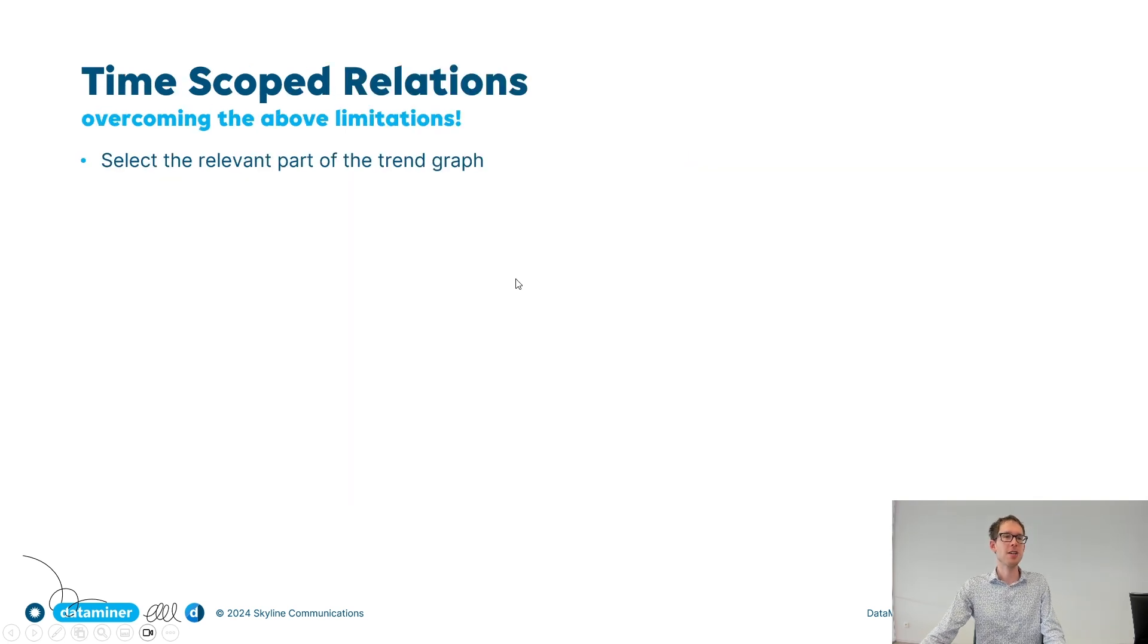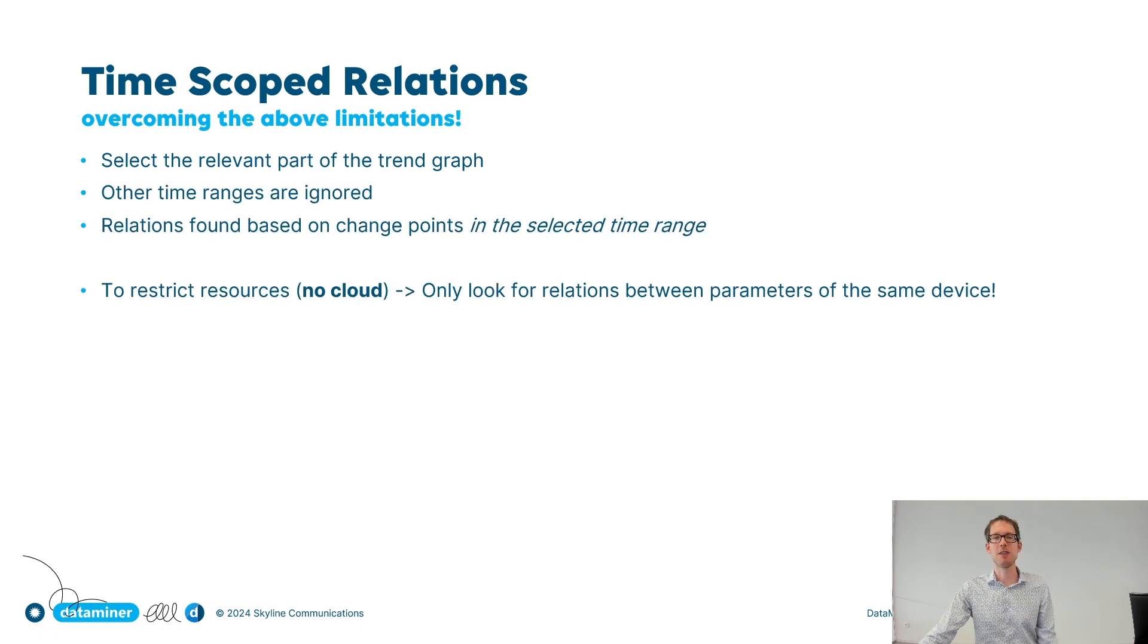All right, so that's time-scoped relations. How does it work? Select the relevant part of the trend graph. And if you do that, the other time ranges are completely ignored. And we're only going to look at relations that we find based on change points in this selected time range. So you select the time range and DataMiner is going to check which other parameters had behavioral changes in this time range. And those are the parameters that it's going to propose to you.